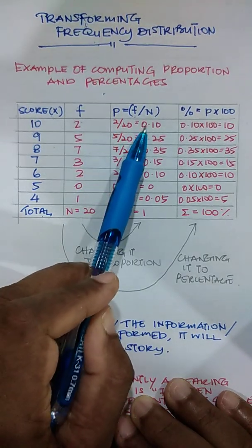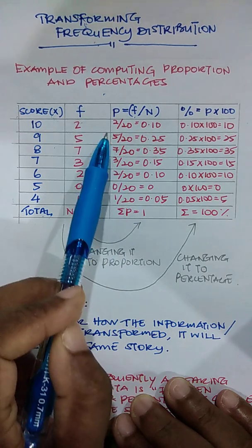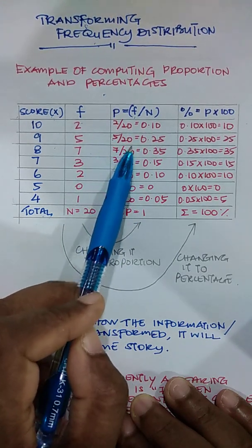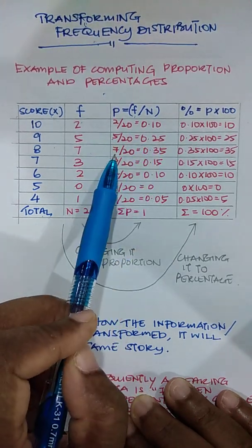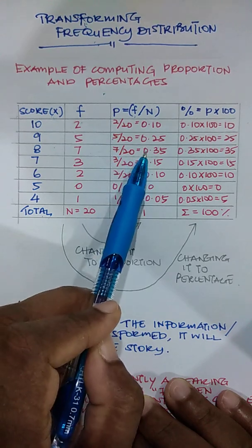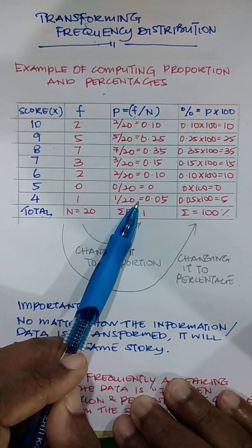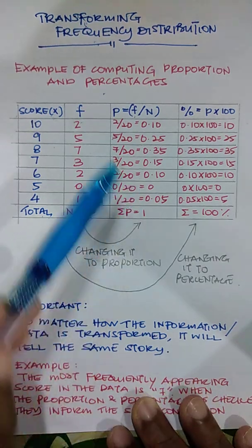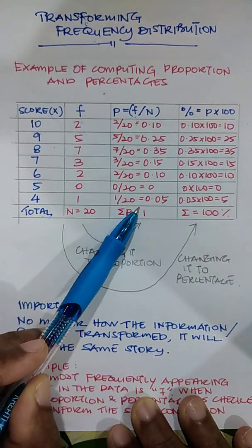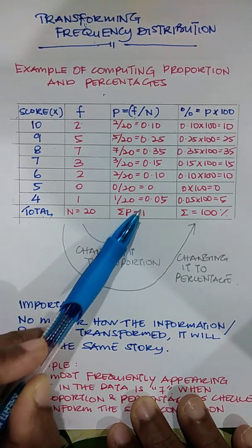So 2 over 20 is 0.10. 5 divided by 20 is 0.25. 7 divided by 20 is 0.35. So you do that for the entire list of scores that you have. So when you add all these proportions, you should get 1.